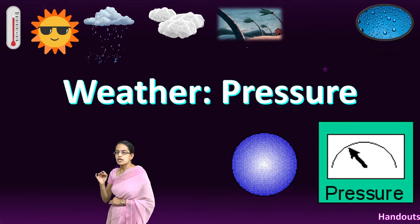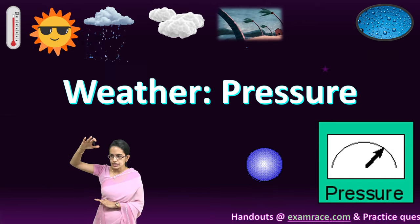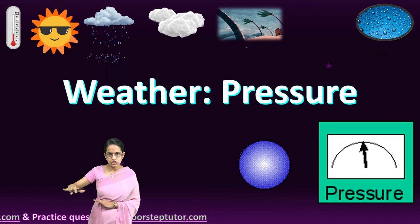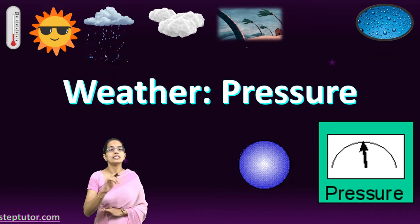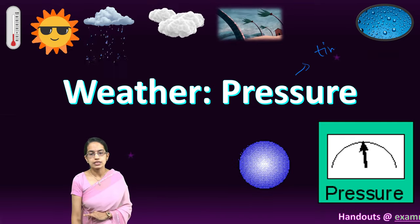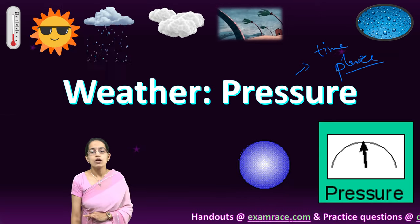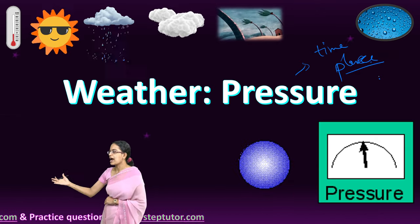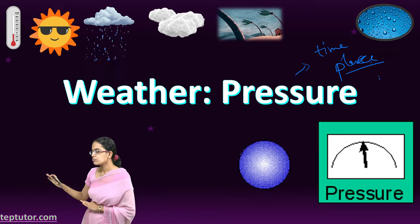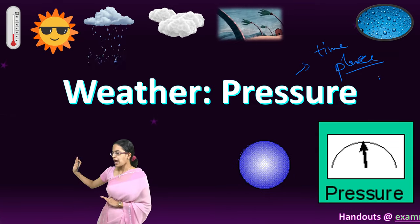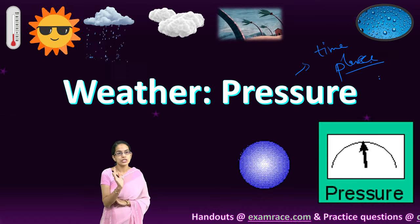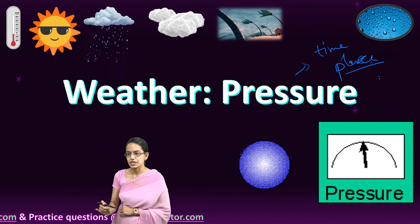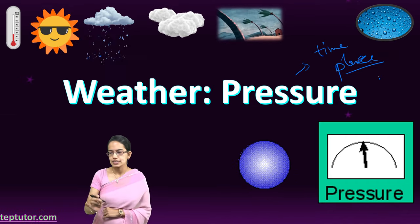Atmospheric pressure is the pressure exerted by the weight of the atmosphere on the Earth's surface. This pressure varies with time and place — based on location and time, pressure would vary. It also occurs due to differential heating; for example, differential heating between land and sea causes wind movement, which transports heat and moisture and ultimately determines pressure. Pressure is also determined by density and temperature — atmospheric pressure simply decreases as you increase in height.